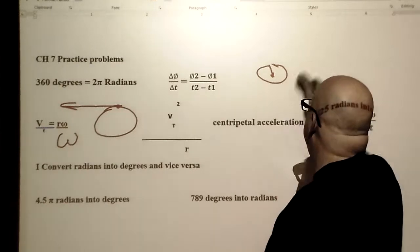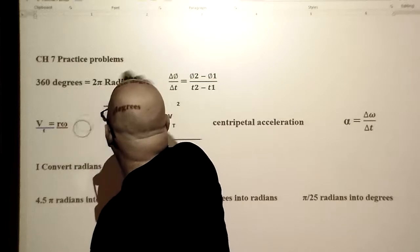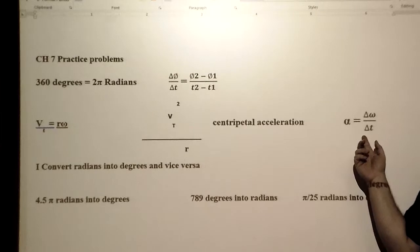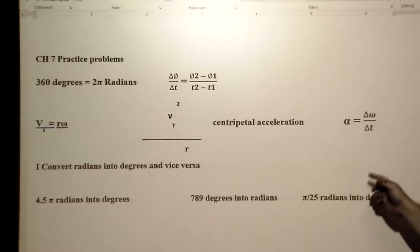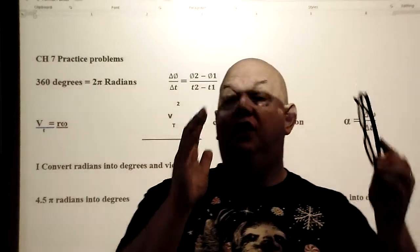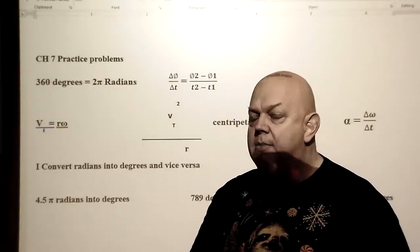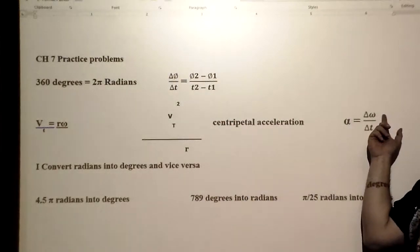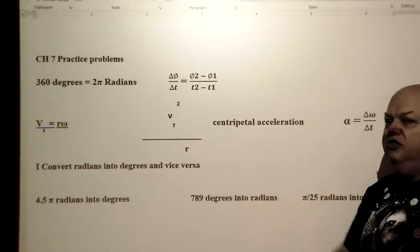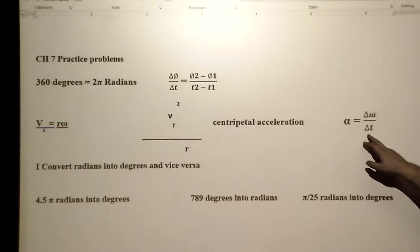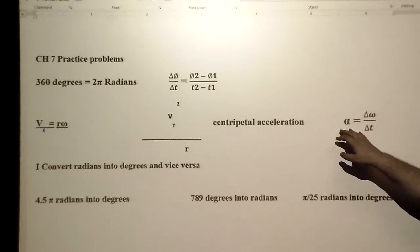We will get to centripetal force a little bit later on. This formula here deals with angular acceleration. It's very similar to linear acceleration — we look at the change in velocity over the change in time, but we are dealing with circular motion, so we use angular velocity. Angular velocity applies to circular motion, not straight-line motion. Change in angular velocity divided by the change in time gives us our angular acceleration.